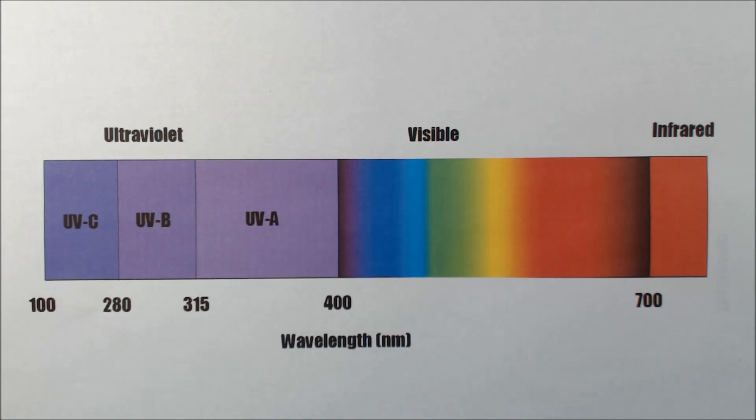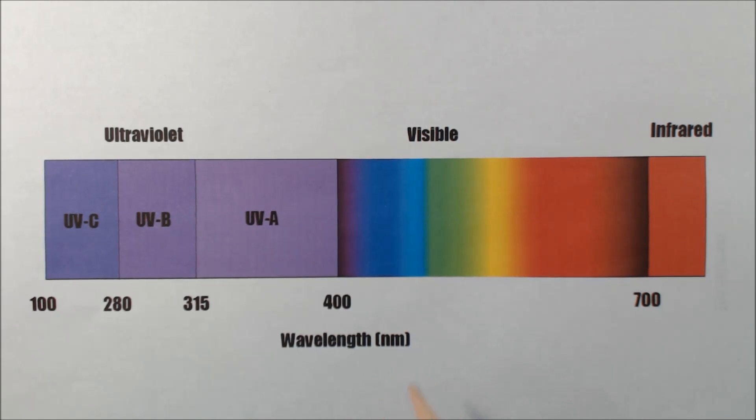When we were looking at the LED specifications they both listed the wavelength of the LED so I thought it would be useful to have a look at what that means. This is a diagram of the electromagnetic spectrum and it shows the wavelength in nanometers. Now nanometer is a very small part of a meter. It's 0.00000001 of a meter.